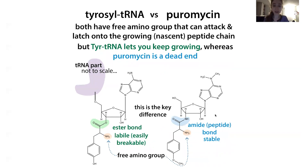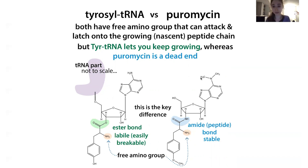Why this happens is because with puromycin, you can form that original bond, but then that bond is stable and unbreakable — more stable than the ester bond you see with the tRNA. Puromycin looks a lot like the end of the tyrosyl-tRNA, so it looks like the tRNA loaded with tyrosine. There are a few differences: you can see an acetyl group, a couple extra methyl groups on the nucleotide part. But most importantly, there's a nitrogen here whereas the tRNA has an oxygen — so puromycin has an amide bond, which is like the peptide bonds in the backbone of proteins. Those bonds are really stable and sturdy.